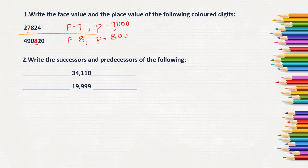Second question: write the successors and predecessors of the following. The number is 34,110. When you subtract one from this given number, you will get the before number. The before number of 110 is 109, so the predecessor of 34,110 is 34,109.